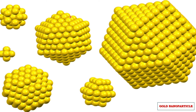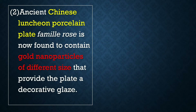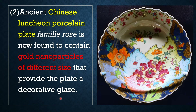Ancient people also used gold nanoparticles for different purposes. The ancient Chinese Falangcai porcelain plate, also called Famille Rose, is now found to contain gold nanoparticles of different sizes that provided the plate a decorative glaze.